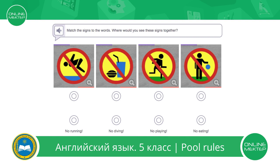Now let's read the rules. No running, no diving, no playing, no eating. Let's match the rules with the signs: no running, no diving, no playing, and no eating.